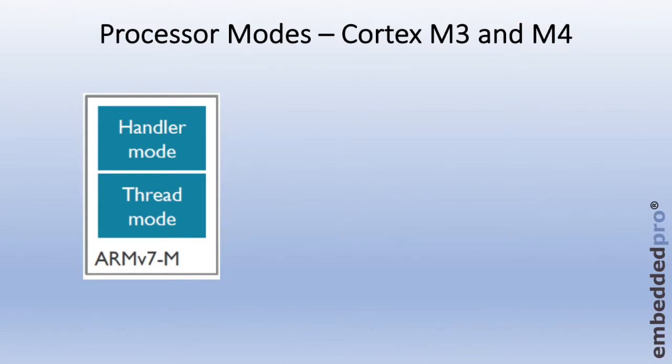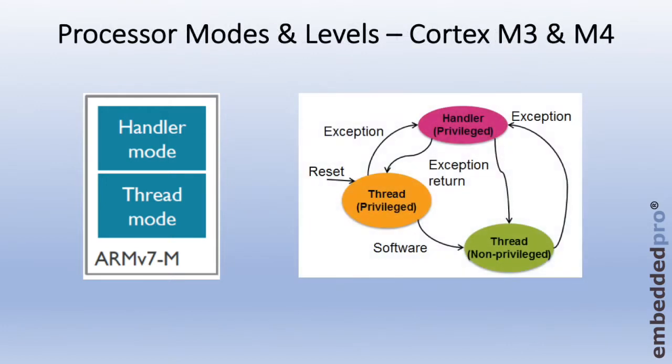With the Cortex-M3 and Cortex-M4 we're already familiar with the processor modes — Thread mode and Handler mode. Thread mode is used to execute application software, whereas Handler mode is used to handle exceptions. Any time our code is running in Thread mode and the core takes an exception or an interrupt, it will transition into Handler mode.